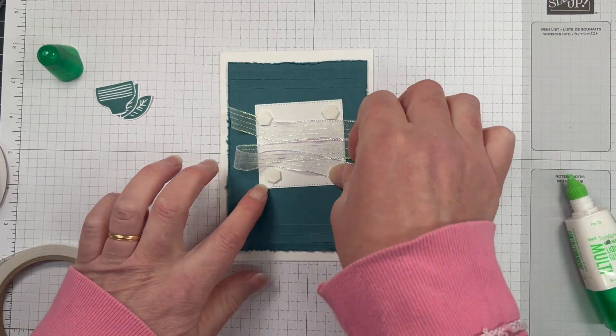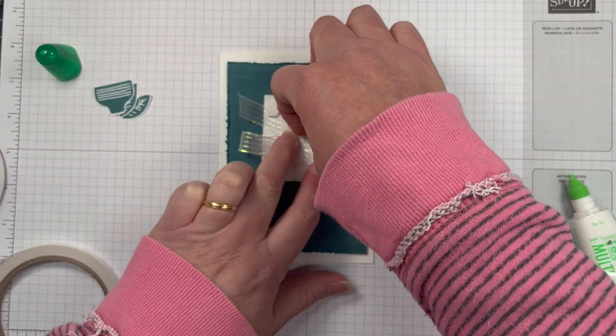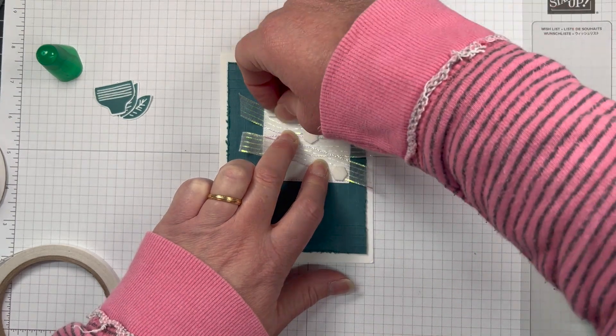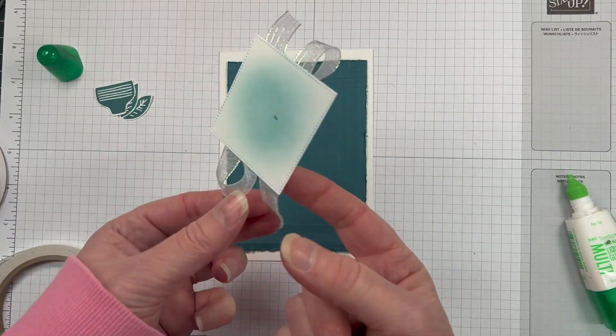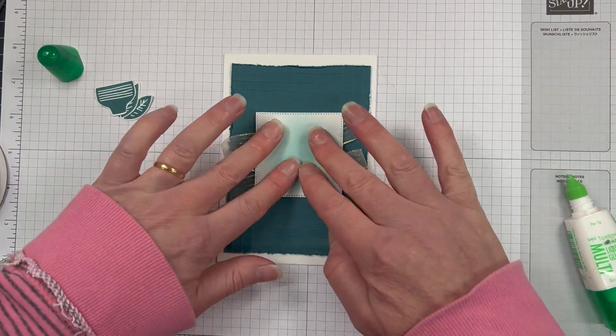Okay, so we've just glued down the Pretty Peacock card base to the basic white thick card base, and we're going to pop up that little die-cut square that we have.